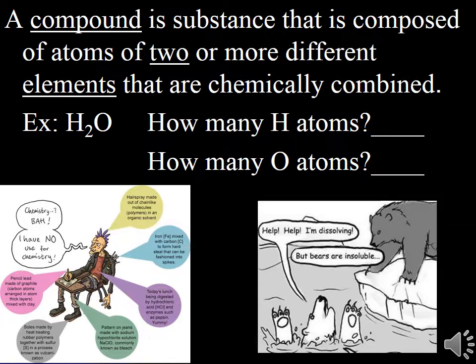A compound is a substance composed of atoms of two or more different elements that are chemically combined. Look at this molecule of water — there are two hydrogen atoms and only one oxygen atom. You don't write the one; that's considered uneducated.